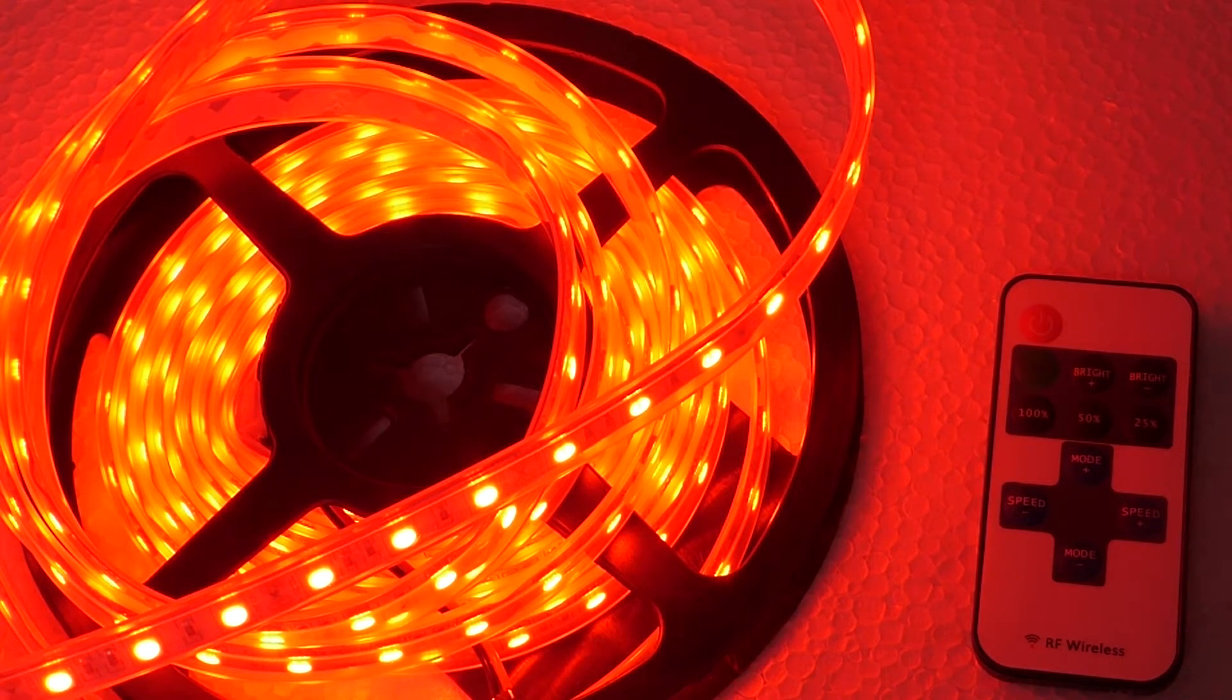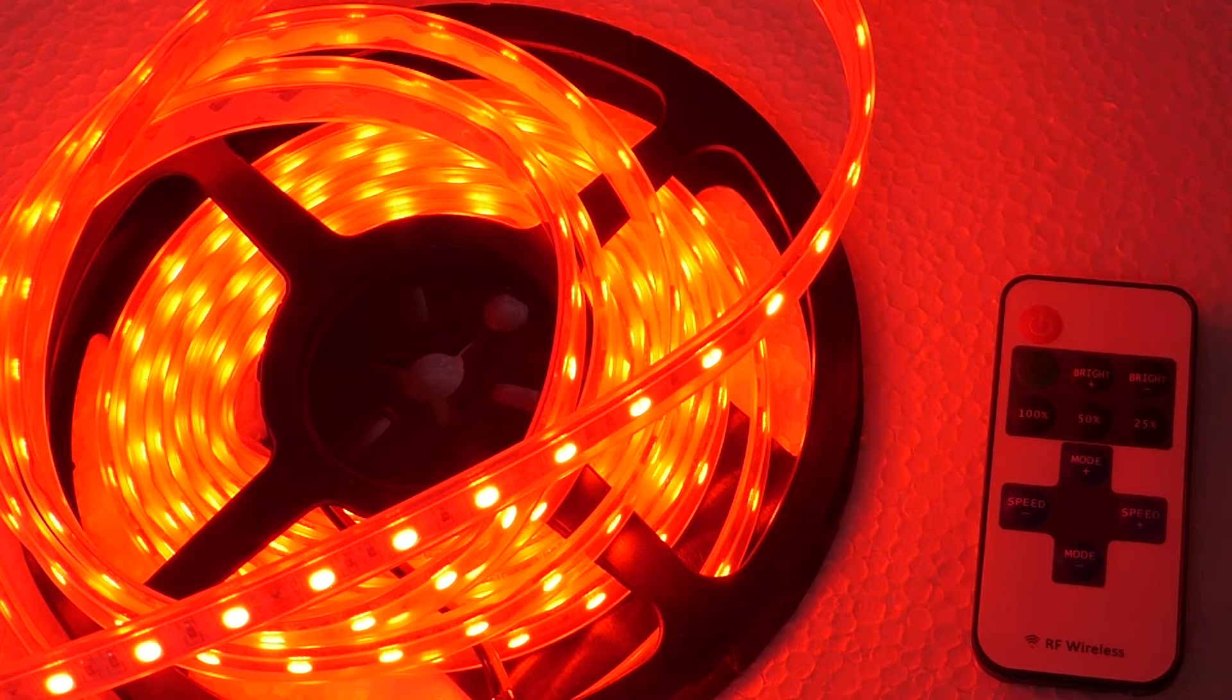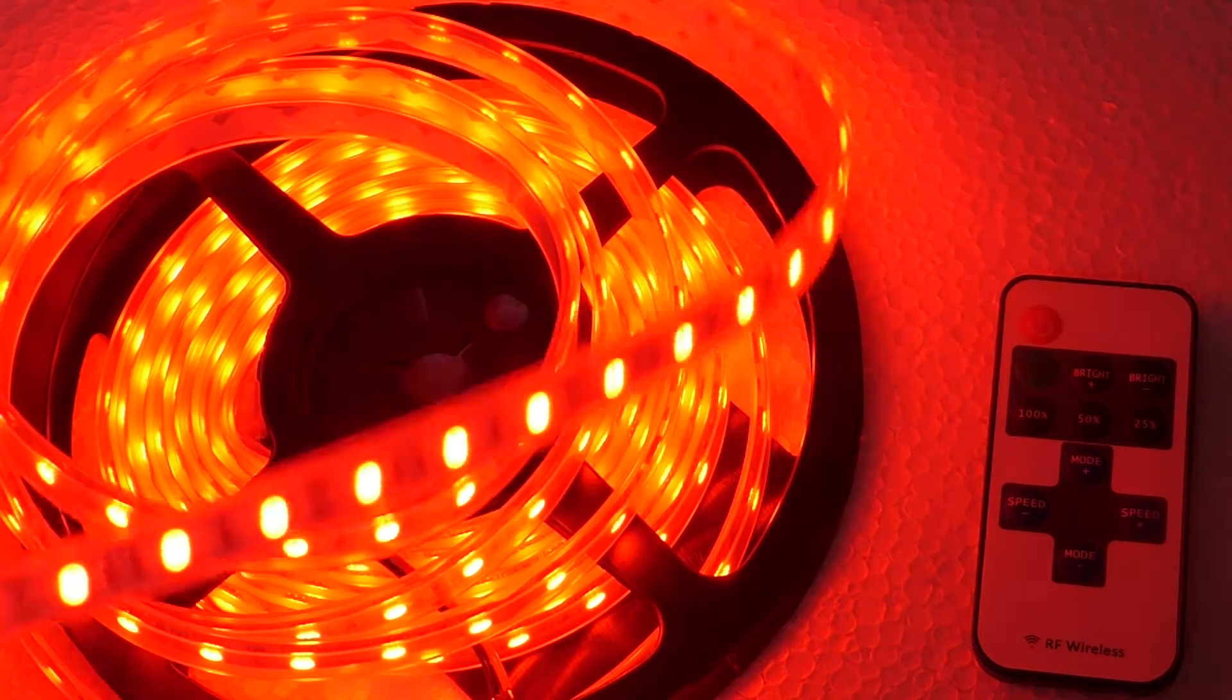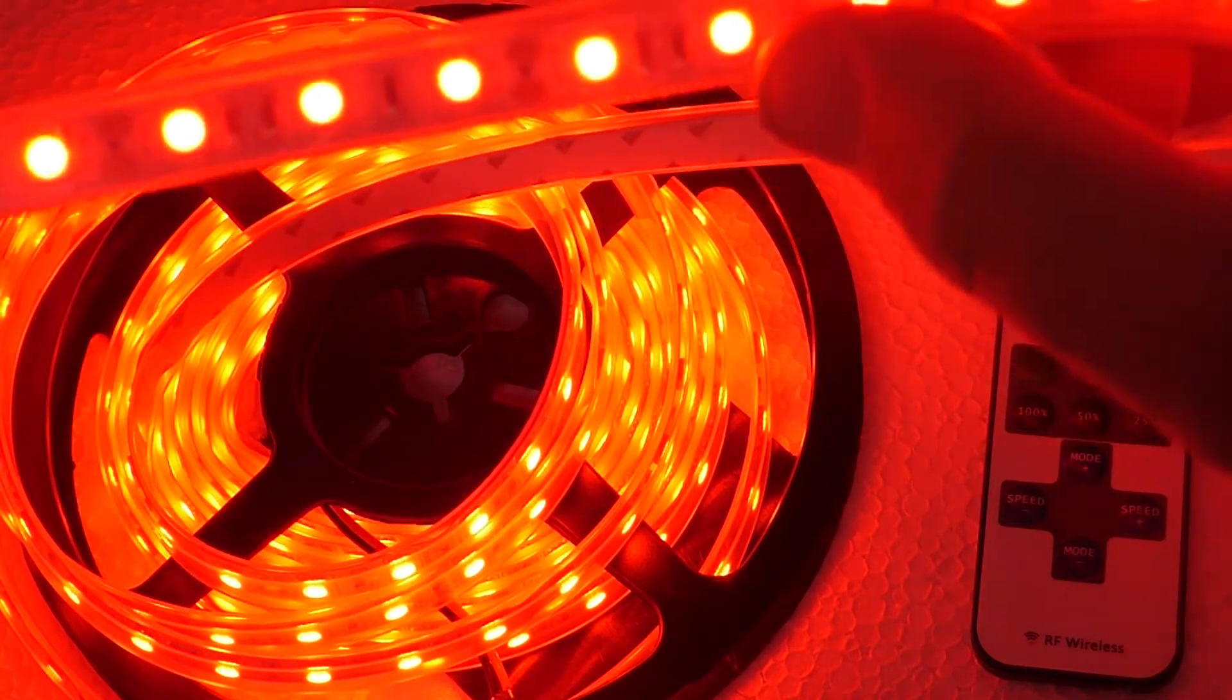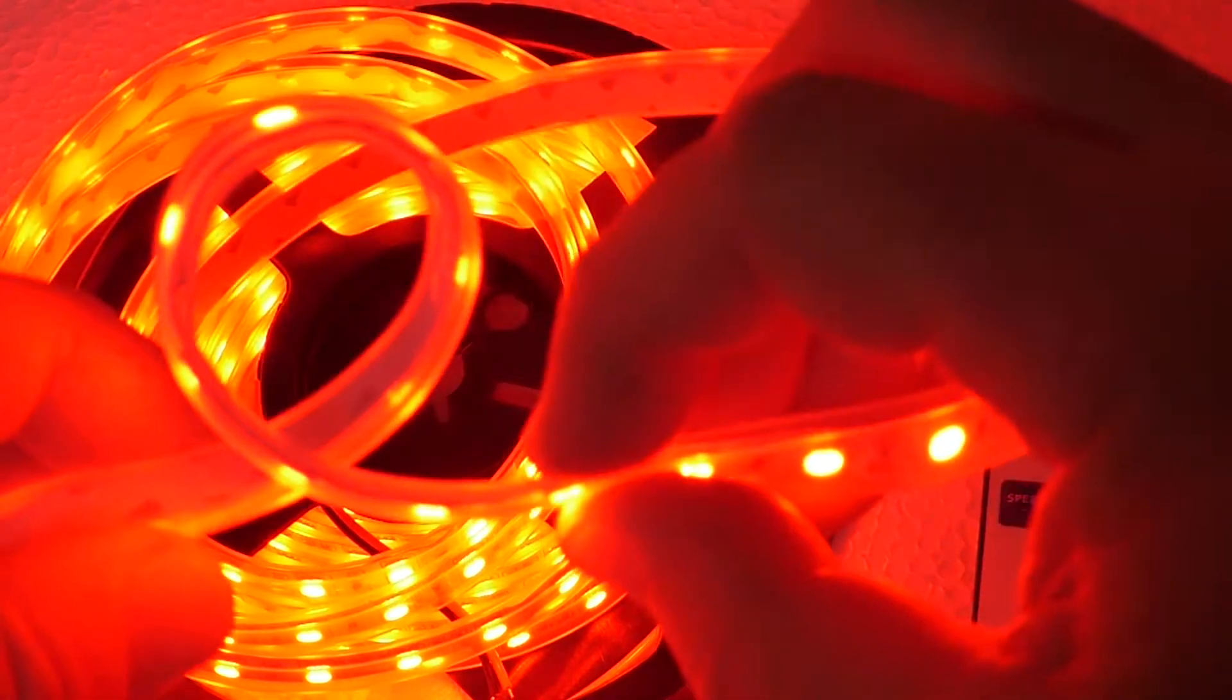Hi this is our IP67 red LED light strip 24 volt. The strip is encased in a flat silicon tube and it's still flexible enough to go around corners.